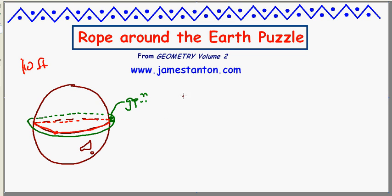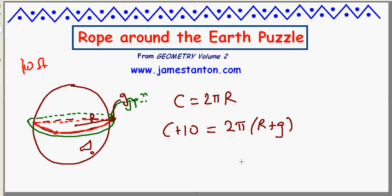We know that the circumference of the Earth is 2π times the radius of the Earth, whatever the radius is. And what we've done is we've added 10 feet of rope. And that is itself a little circle. Its radius is going to be the radius of the Earth plus G. We'll call G for the gap. So the original circumference plus an extra 10 feet is 2π times the radius plus the gap. That's the new radius.